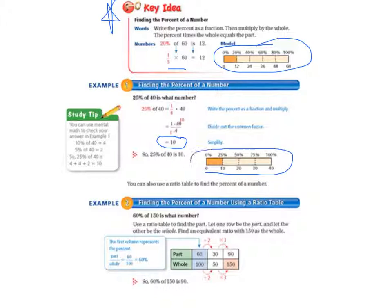And here's our model to show you how that looks. It says you can also use a ratio table to find the percent of a number. And we'll do that in just a second, but let's check out our study tip first. You can use mental math to check your answer. In example 1, 10% of 40 equals 4, and 5% of 40 equals 2. Because that's half of 10%. So 25% of 40 is 4 plus 4 plus 2, which equals 10.